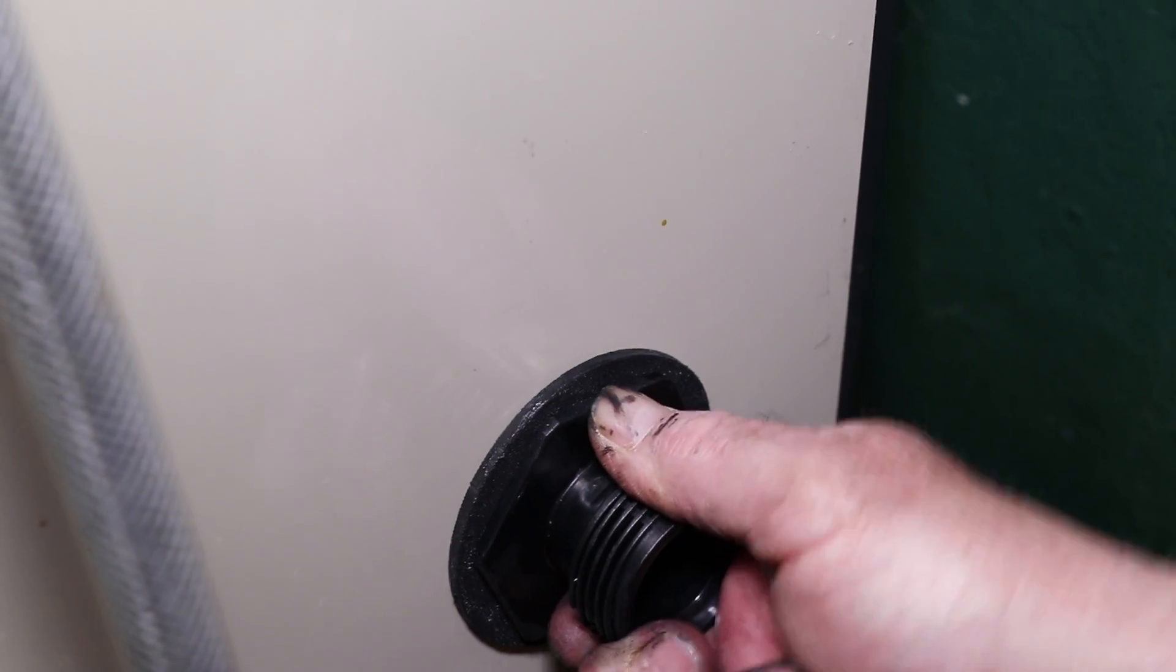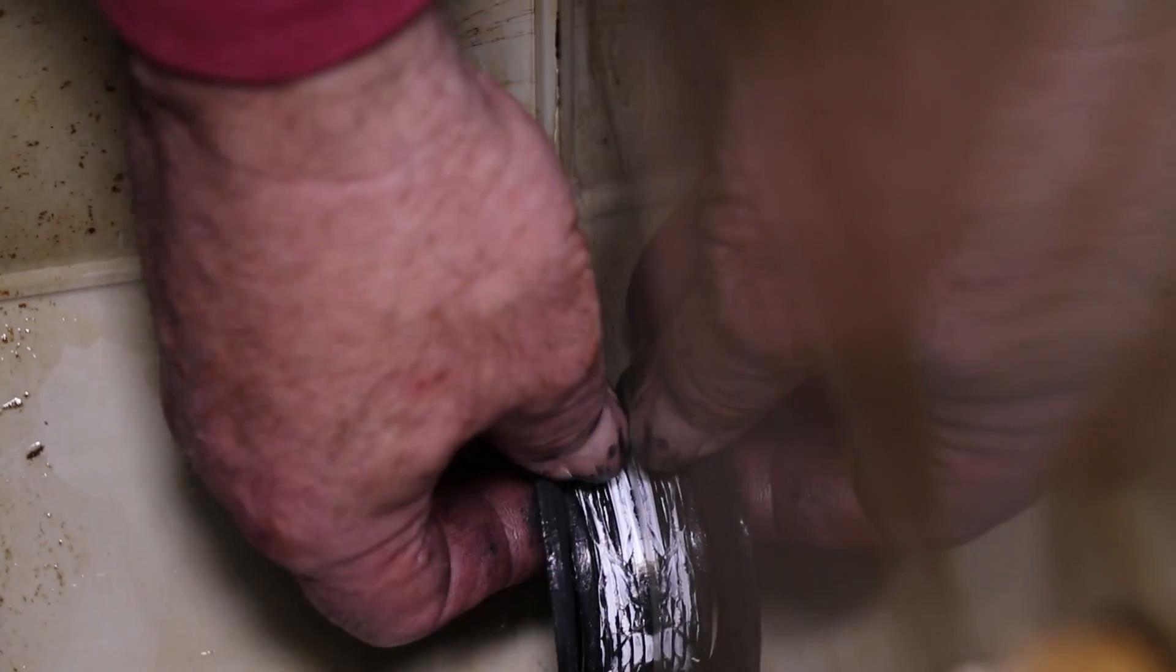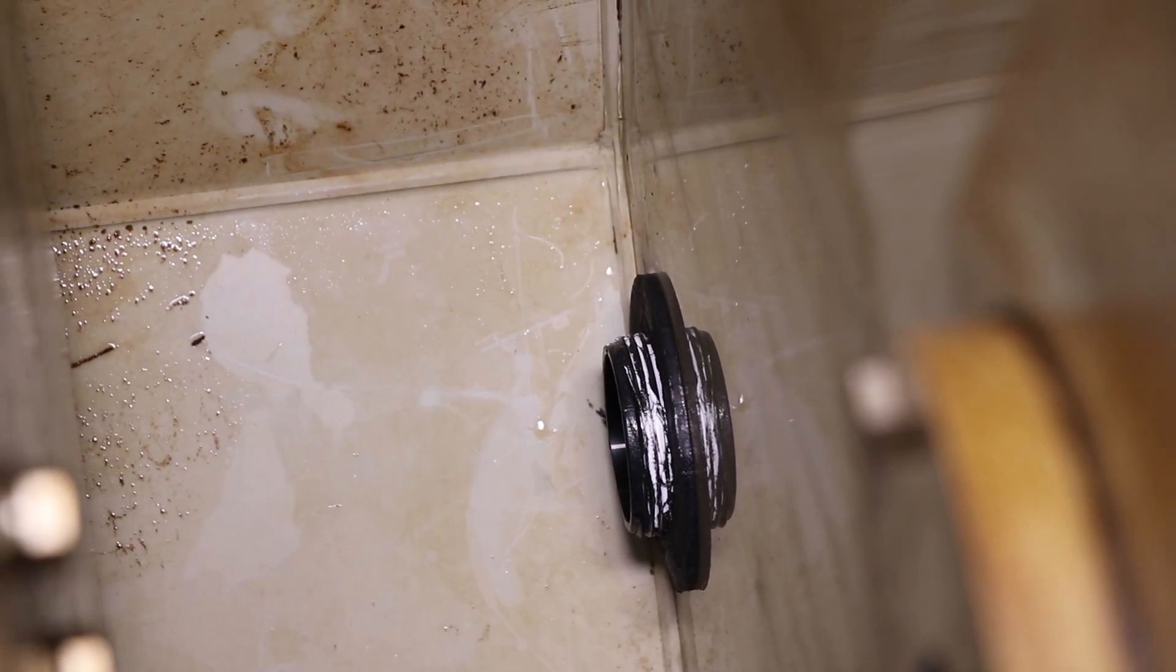You can see how tight a fit it is, it's really tight. And now what we've got to do is put this on the other side of it. So there we go, it's sticking through now. I can put the internal gasket on it, like so, and then put the outer collar on it.